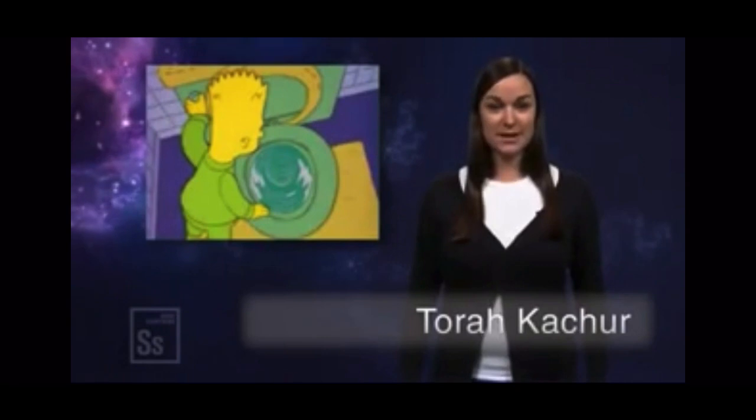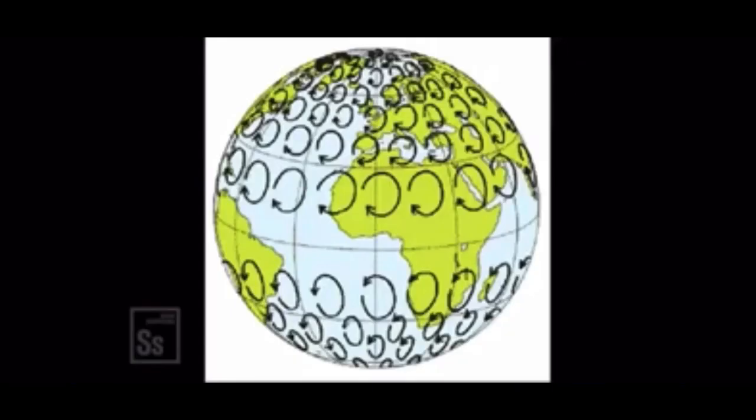If science can be learned from The Simpsons, toilets flush counterclockwise in the Northern Hemisphere and clockwise in the Southern Hemisphere. This is something called the Coriolis Effect,